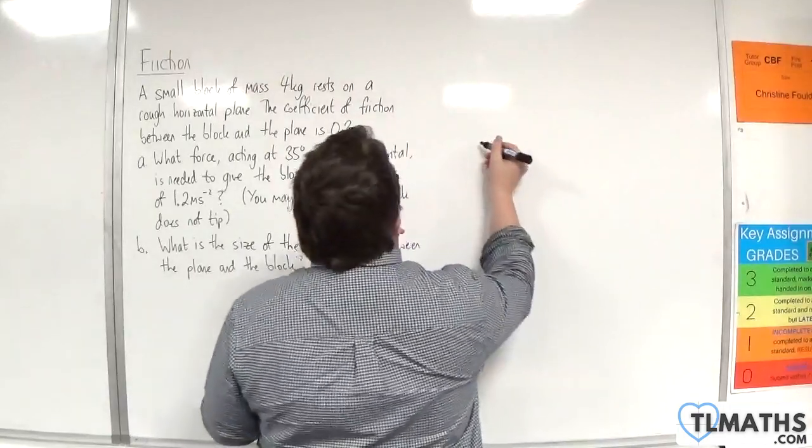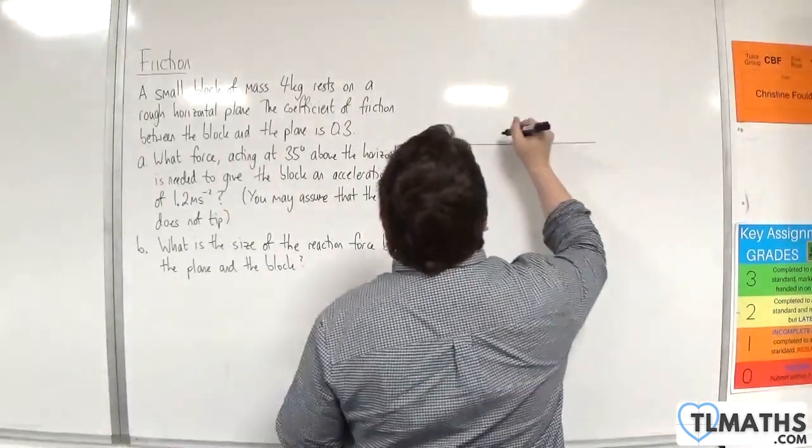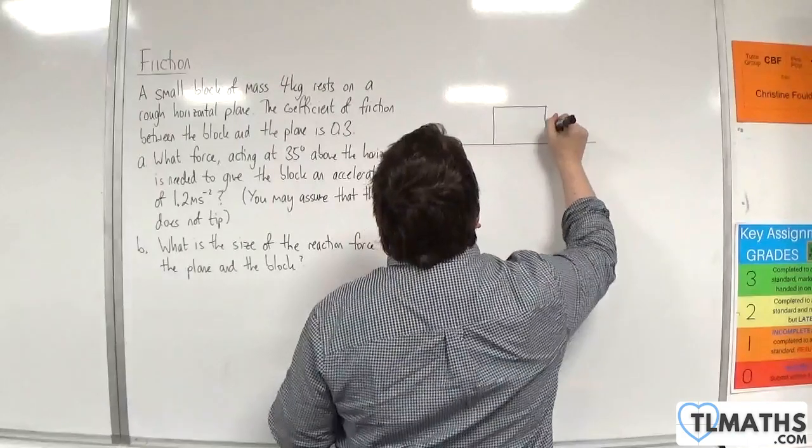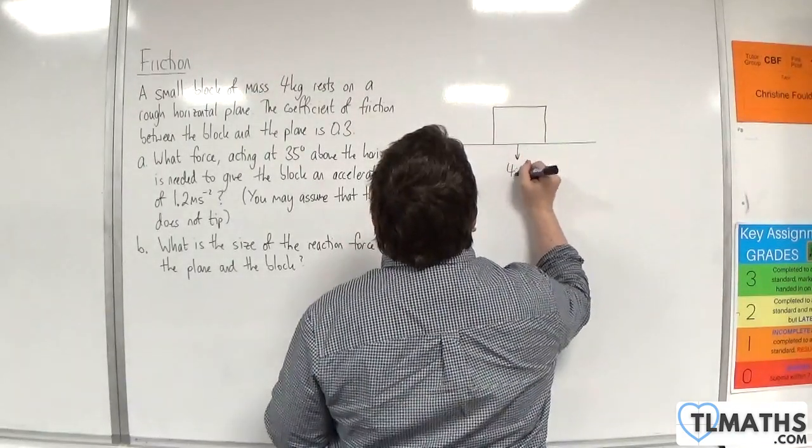Okay, so let's draw a diagram. We've got a rough horizontal plane with a block which has a mass of 4 kilos, so a weight of 4g.